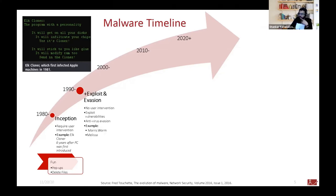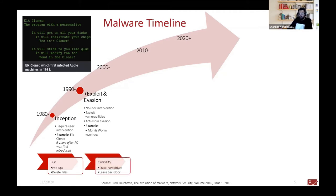From the 1990s onwards, you started seeing exploit and evasion techniques. You no longer needed user intervention. Malware started exploiting vulnerabilities and having antivirus evasion — for example, the infamous Morris worm or the Melissa worm. At this stage, malware was motivated by curiosity: what can I do over the network? Features included erasing hard drives and leaving backdoors, so the attacker could log in and do something with the infected machine.